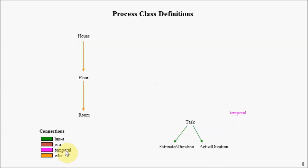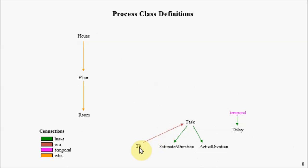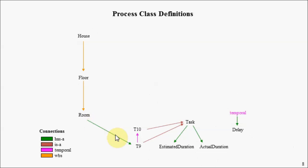A second property called actual duration. We'll introduce a new kind of connection called a temporal connection, and we're going to introduce an attribute associated with that connection called delay. We'll introduce an entity called T9, which has an 'is a' relationship — so T9 is a task. Similarly, T10 is a task. We're going to create a temporal relationship between T9 and T10, meaning that in order to start T10, T9 must first complete. Then we connect T9 as a 'has a' property of this higher-level entity called a room.